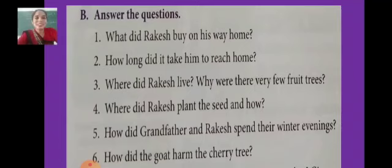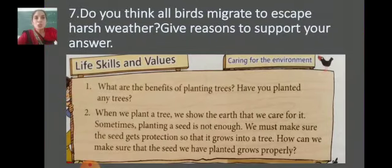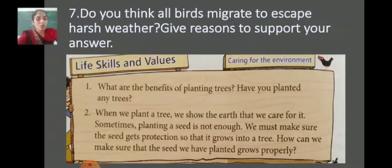Question number 6: How did the goat harm the cherry tree? When the tree was about two feet in height, a goat entered the garden and ate all the leaves of the tree. Only the stem and two branches remained. Question number 7: Do you think all birds migrate to escape harsh weather? Give reasons to support your answer. Not all, but many birds such as geese, ducks and waterfowls migrate to escape the harsh weather. Birds living in the Arctic regions have certain adaptations which help them to survive the cold weather and they do not migrate.